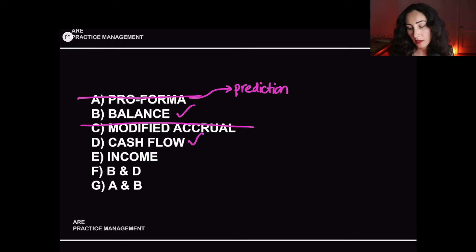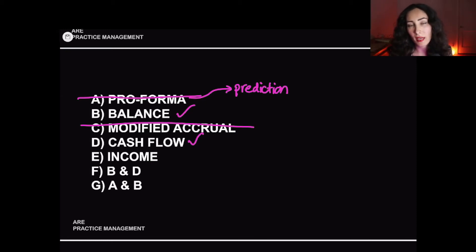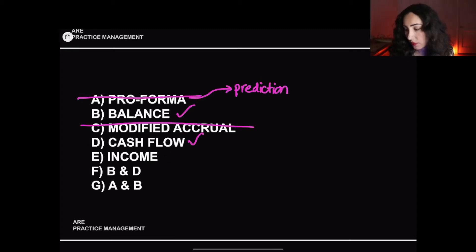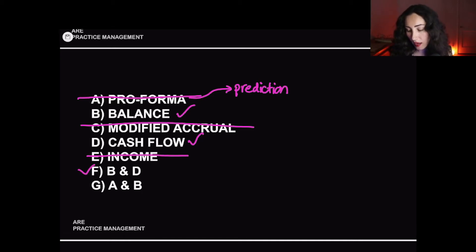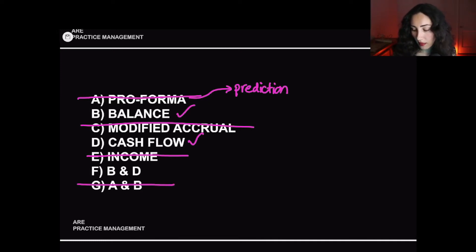Income statement: will the $100,000 of savings show up on the income or profit and loss statement? Not really, because the income statement is revenue and expenses related to running the business and production of your product. So the income statement would not be on that list. What are we left with? B and D. We know it's not G, so our final answer is F — both the balance sheet and cash flow statement.